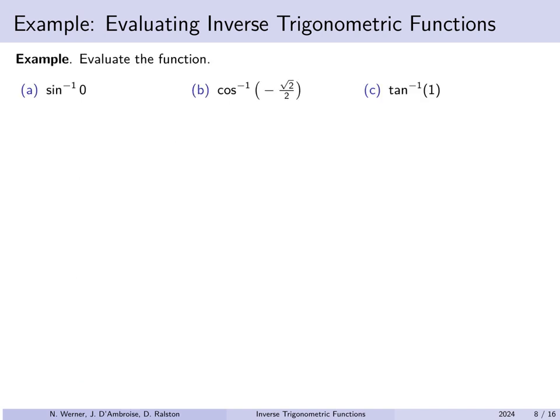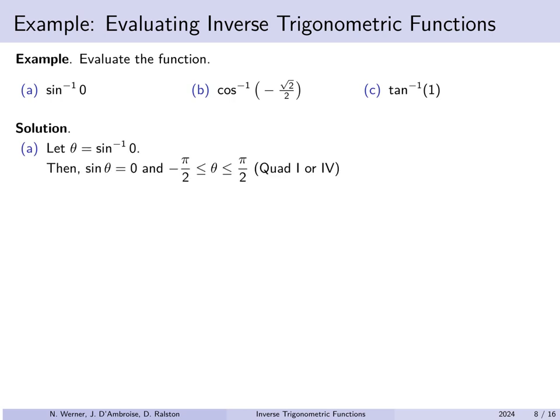Let's evaluate the following: arc sine of 0, arc cosine of minus root 2 over 2, and arc tan of 1. If theta is the arc sine of 0, then the sine of theta is 0 and theta is between minus pi over 2 and pi over 2. The only angle in that range whose sine is 0 is the angle of 0. So the inverse sine of 0 is 0.